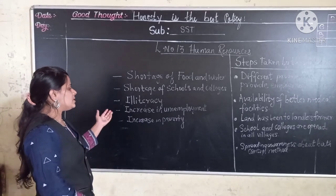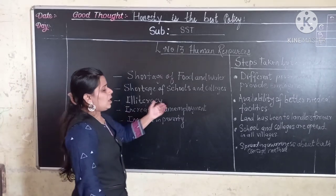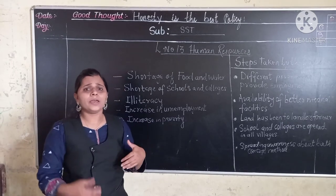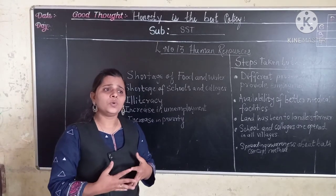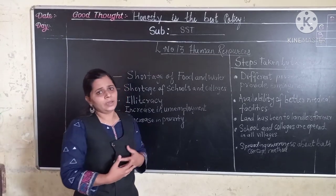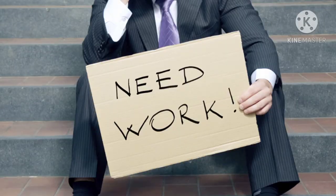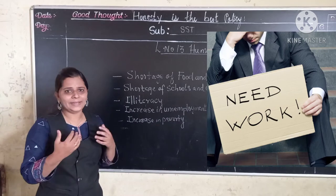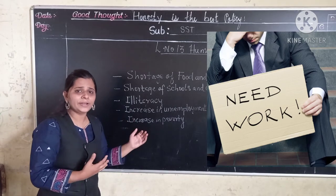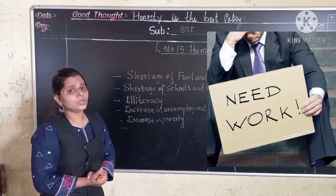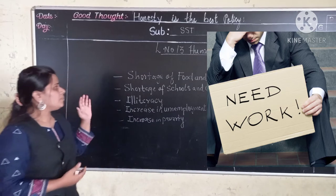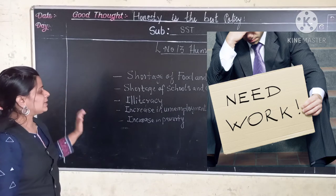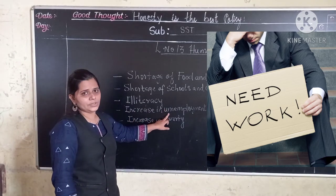Then next we discussed about increasing unemployment. Because of ever increasing population, fewer people will get jobs. You can see in the picture — he is educated, but he does not get a job in any company, because the seats are already full. Though he is educated, he did not get the job. Because of ever increasing population, people face the problem of unemployment.